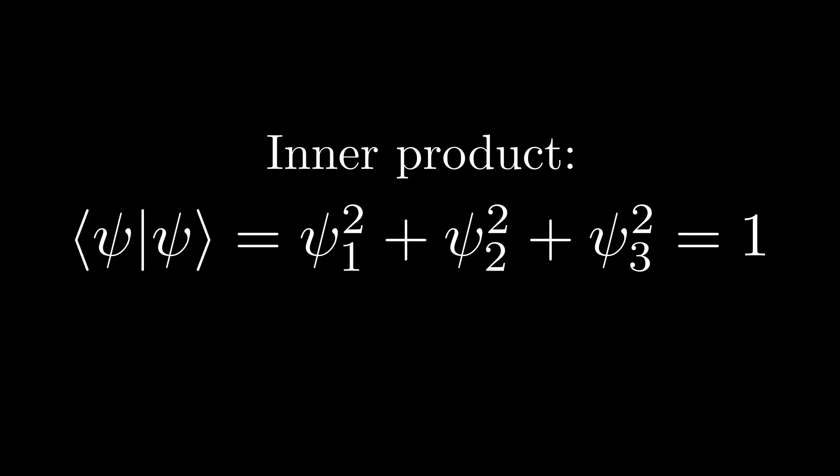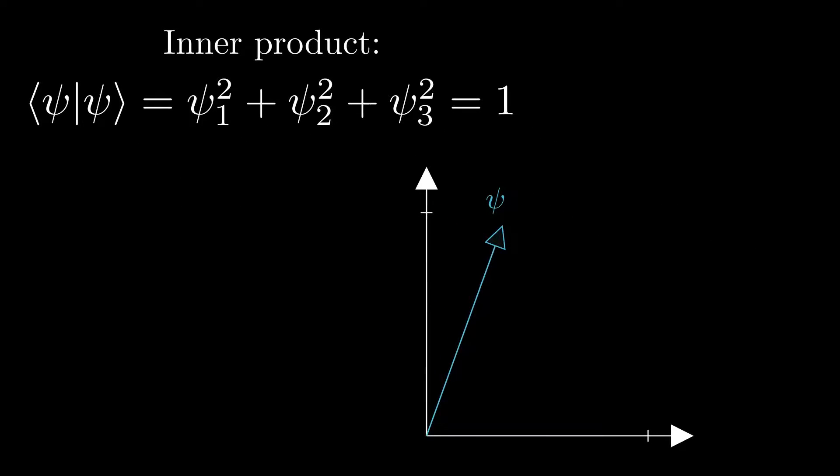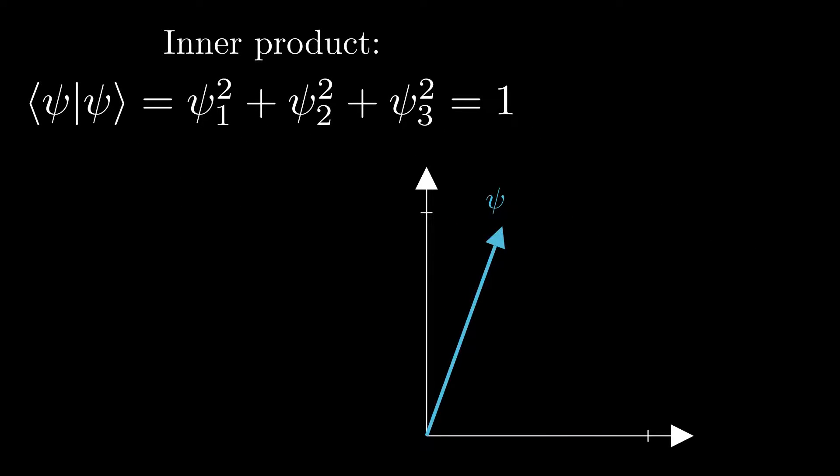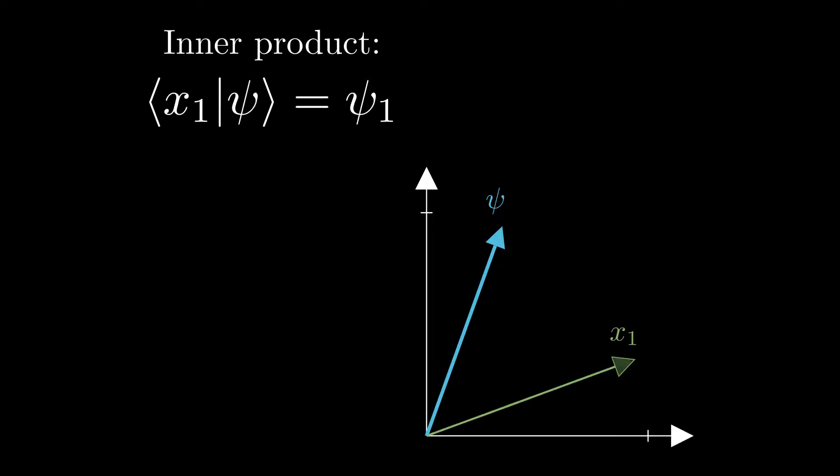The use of dot products becomes even more apparent when working on a specific basis. In our case, the three spatial coordinate bases. Say we want to know how much our wave function is pointed along the x1 direction, we simply take the bra-ket combination of the wave function and the x1 basis vector. This inner product can be seen as the length of the component of psi along the direction of the x1 vector.